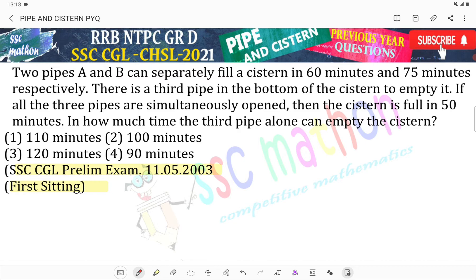Two pipes A and B can separately fill a cistern in 60 minutes and 75 minutes respectively. There is a third pipe in the bottom of the cistern to empty it. If all three pipes are simultaneously opened, then the cistern is full in 50 minutes.